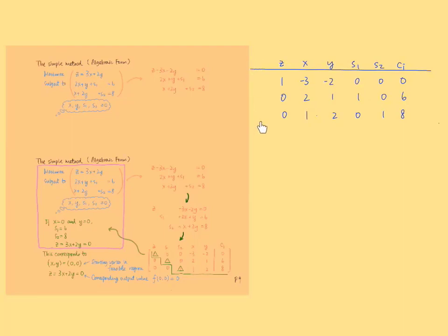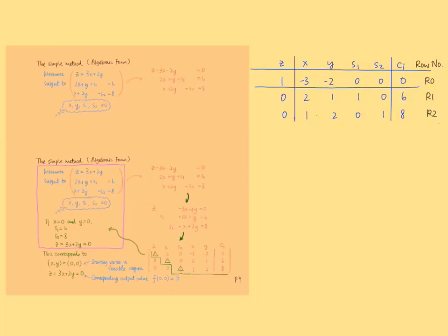You can double-check that all entries in the ci column should be non-negative. Please spare one column at the left of column z — we shall write some information here during our process. To distinguish the objective function from the other constraints, we draw a separation line here and name this row as row 0. The rows for the constraint equations are row 1 and row 2, marked next to the ci column. We can regard it as a system of linear equations with three equations and five unknowns, bearing in mind that x, y, s1, and s2 are non-negative.